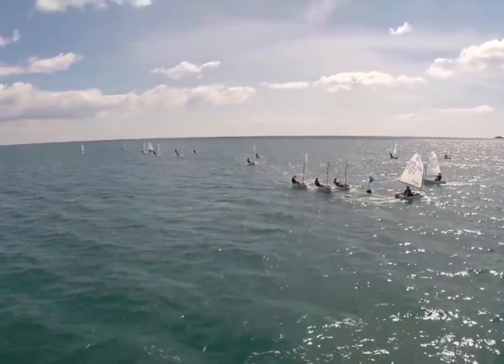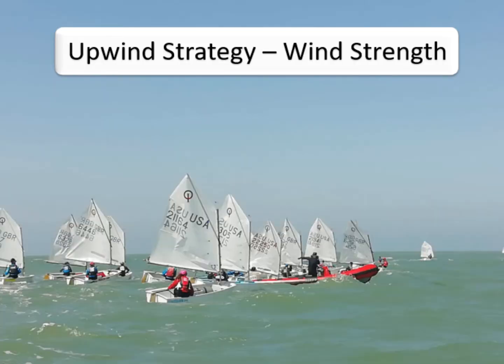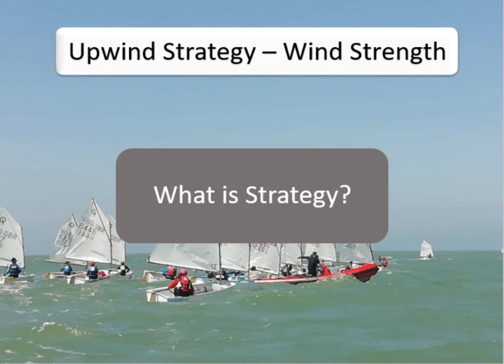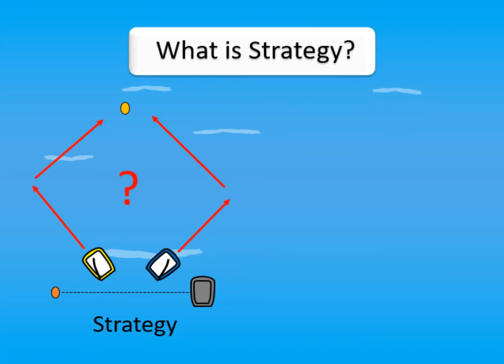In the next few videos we're going to start looking outside the boat at external factors affecting us when racing around the course. Today we're going to be focusing on how factors affect the amount of wind across the course and how that should affect your strategy upwind. But before jumping straight into that, I want to outline what we mean by strategy and give that buzzword a bit of context. Your race strategy can be described as the fastest route you would sail around the course without the impact from any other boats — imagine a time trial setup where all you're racing is the clock.